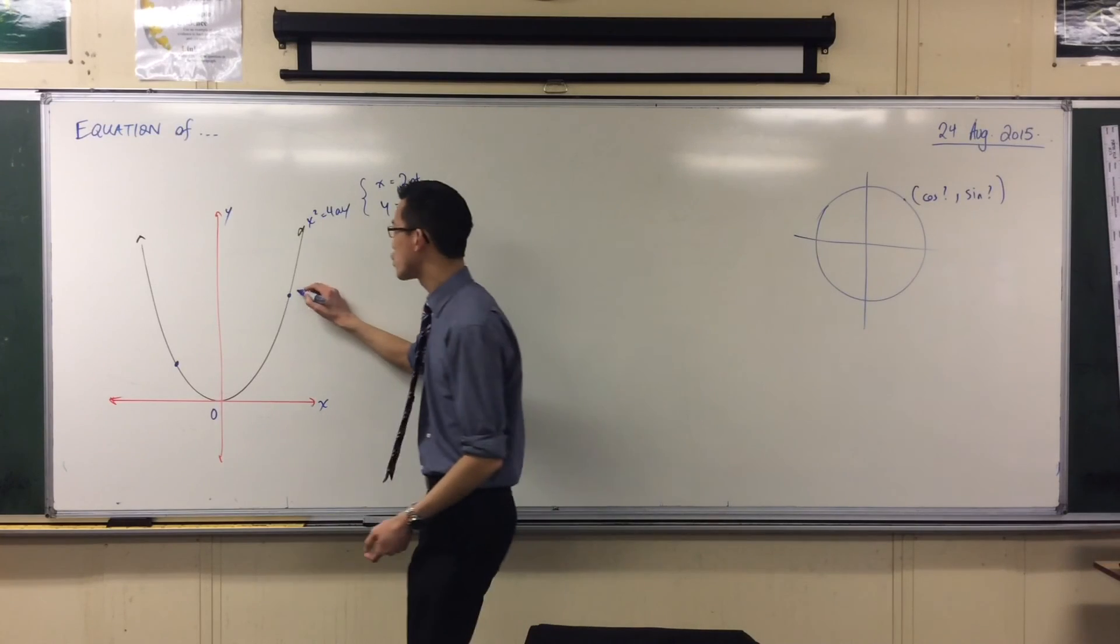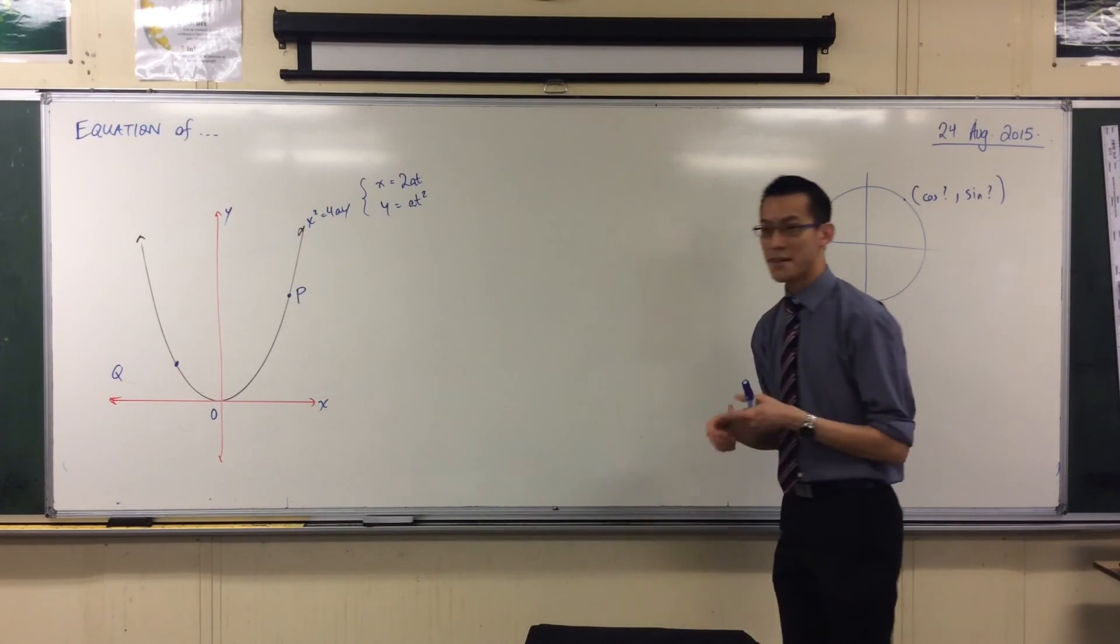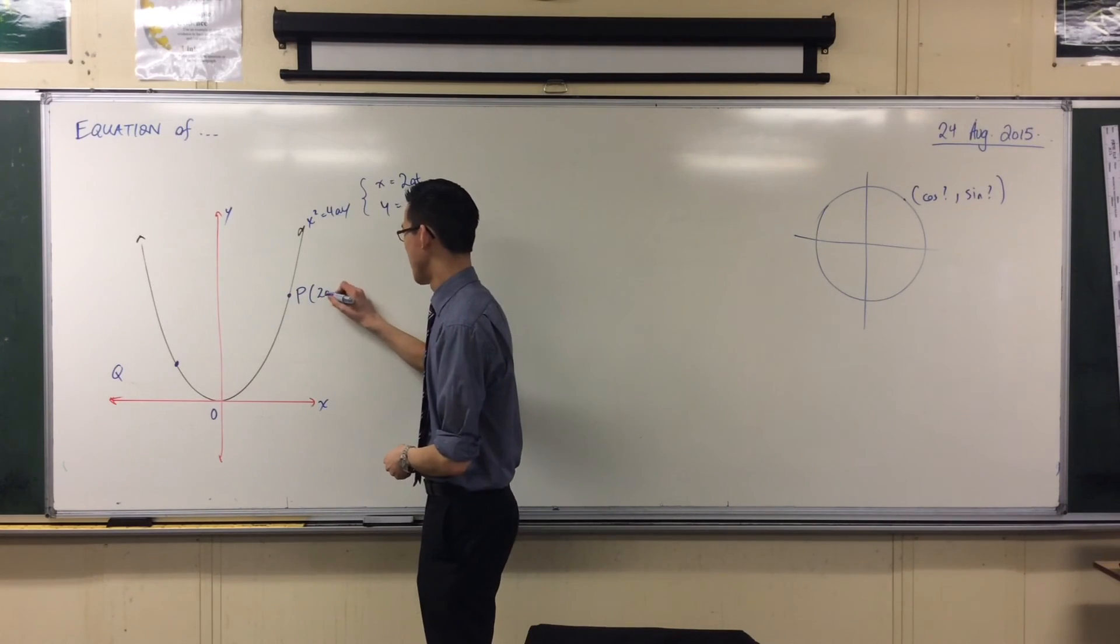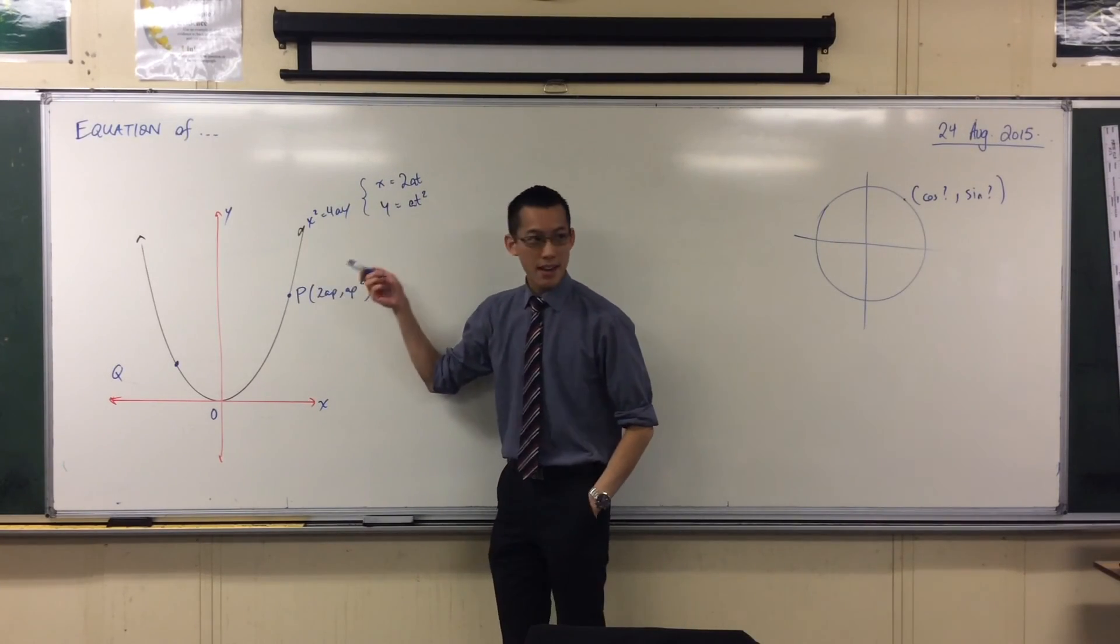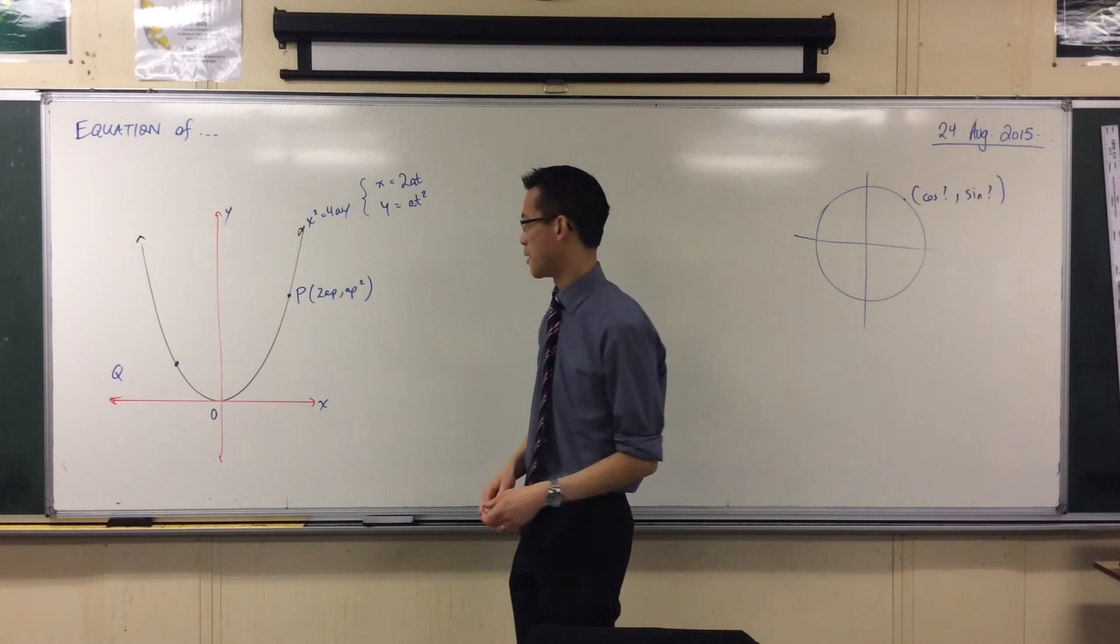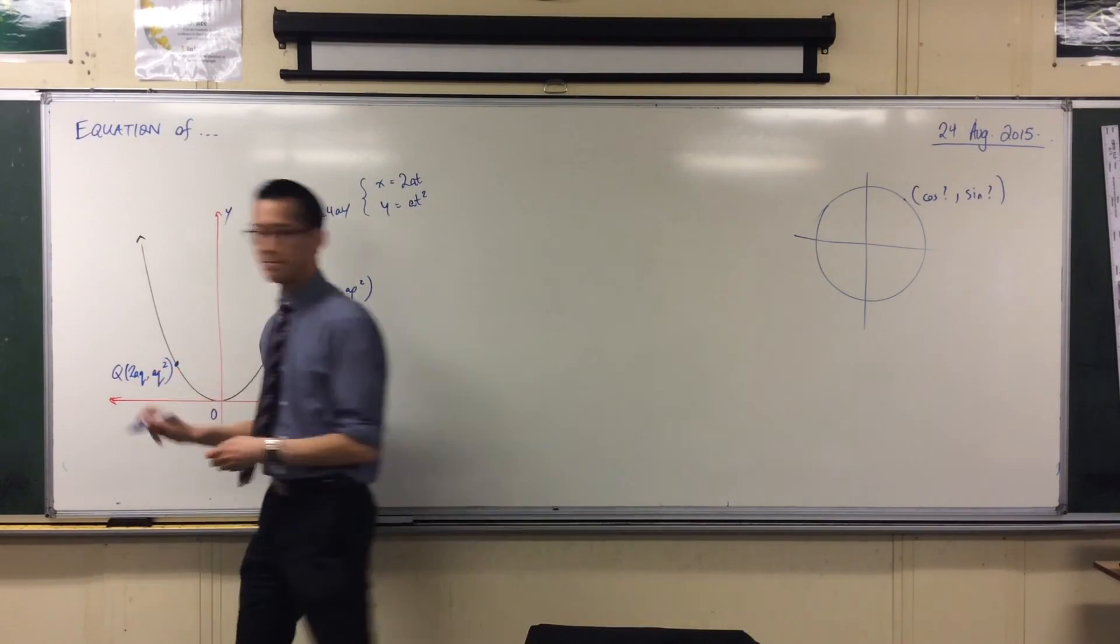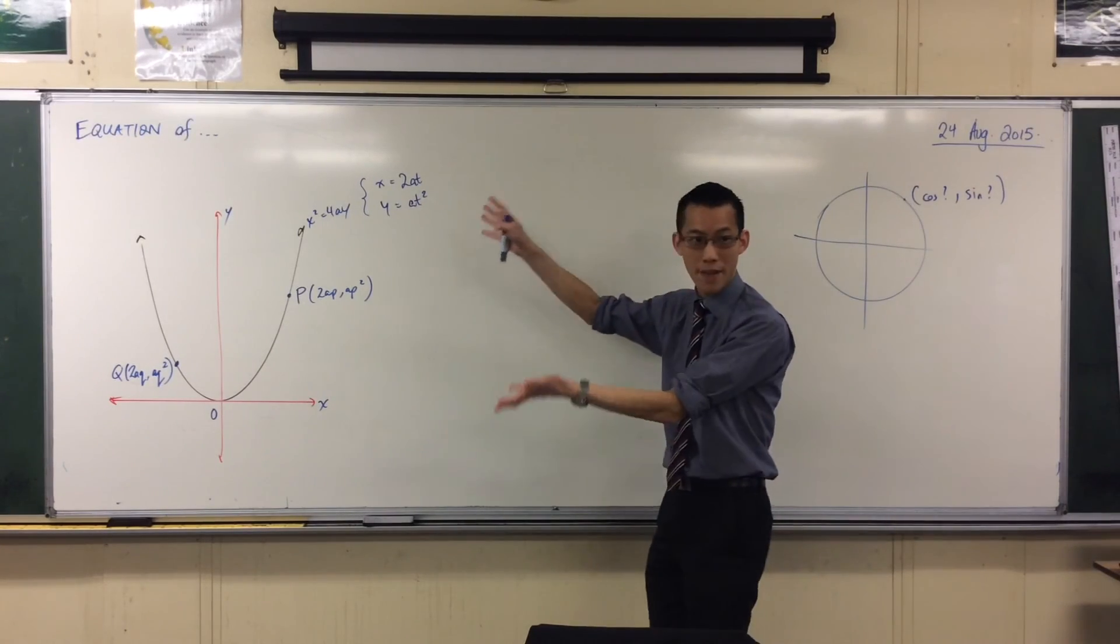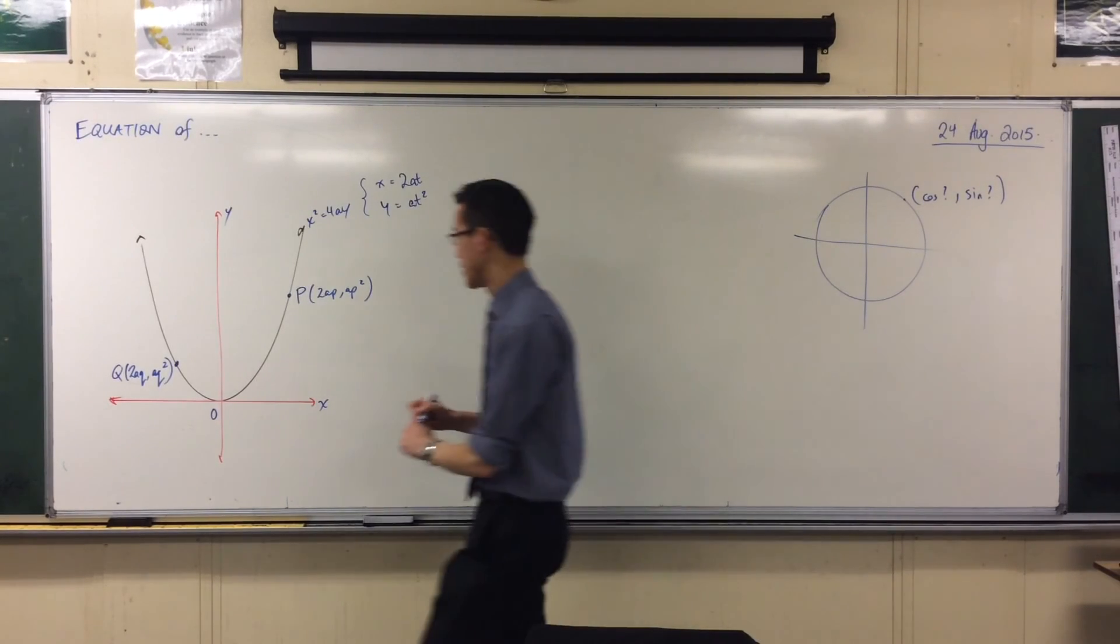They both have this form. So if I have two points that I'm interested in, P and Q is our next available letter, right? To minimize the number of things I'm trying to remember, we call the parameter at point P little p, right? Good morning. So instead of 2AT, AT squared, this is where our parameter T happens to have the particular value P, whatever that is. So that's some constant, okay? And for Q, we'll do the same thing. So I've got 2aq, aq squared. So we're going to think about equations related to these points and related to features of the graph that are connected to these points. We're going to start with the simplest one, which is you've got two of them. Let's join them together.